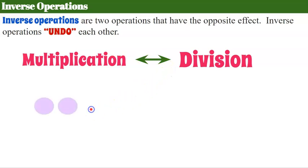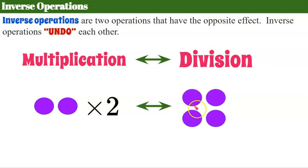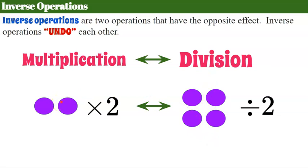Let's look at an example. If I have two dots and I multiply by two — think of it as doubling — instead of two I now have four. To undo that doubling, you divide by two. If I divide by two, I cut it in half and I have two again. So multiply by two gives four; divide by two gives two back. They are inverse operations.